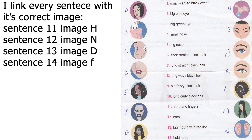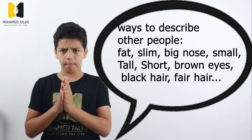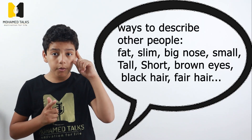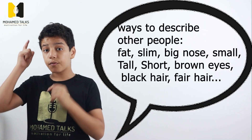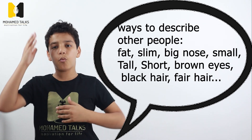Now that we've done the task, let's speak about it for a second. In this task, we've seen how we can describe other people in many different ways. So let's try and describe those people in other ways. We could say that they are fat, slim, or skinny. We could say that they have black hair, brown hair, orange hair, blonde hair, fair hair, curly hair, big frizzy hair, or wavy hair.